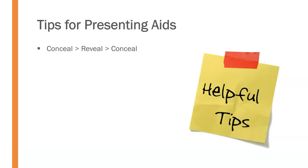You want to have it concealed until you're ready for it. Then when you want to use it, certainly reveal it, use it, refer to it, and do all of that. And then when you're done and you don't want the audience's attention on that anymore, conceal it again. For an object, that may mean covering it up or putting it away. For a slide presentation, it may mean having your slides go dark so the audience is not constantly distracted by it.